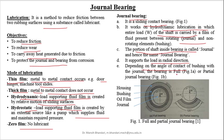We can understand the difference between full journal bearing and partial journal bearing by looking at figures 1a and 1b. In full journal bearing, the angle of contact of the bushing with the journal is 360 degrees. These bearings can take load in all radial directions. In partial journal bearings, the angle of contact between the bush and the journal is less than 180 degrees, and mostly it is 120 degrees. Partial bearings take load in only one radial direction.